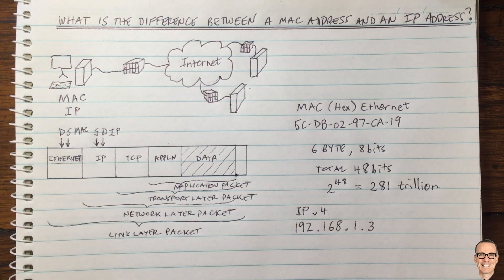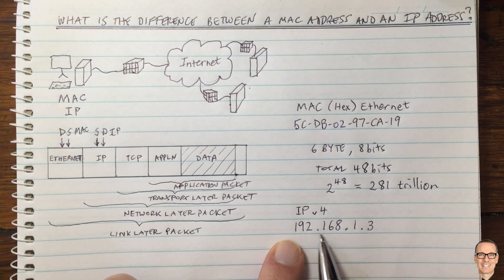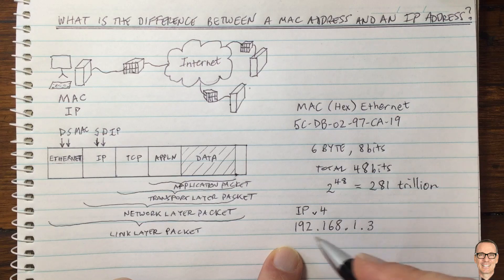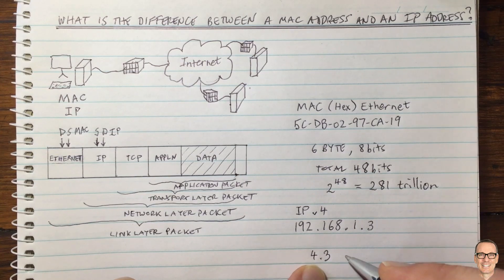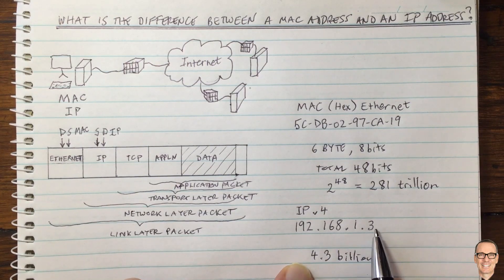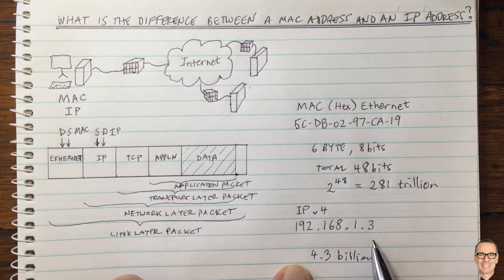How does that compare to IP addresses? In IPv4, the address is written in groups of three decimal digits. Because of the way they're constructed, there are only 4.3 billion possible addresses — far fewer than 281 trillion. So IP addresses cannot be allocated to each individual device at manufacture; instead, they're given out dynamically when they're needed, which has both advantages and disadvantages.